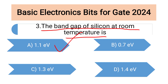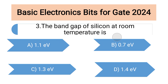If the question asked for the band gap of germanium instead of silicon, then the answer would be option B, because for germanium the band gap is 0.7 electron volts.